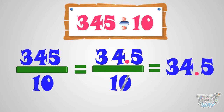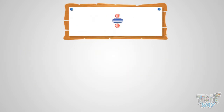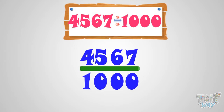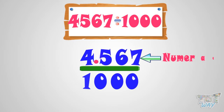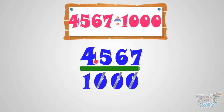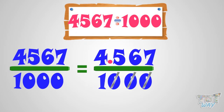Now let's take more such examples. Let's divide 4567 by 1000. In order to divide by 1000, we need to cut three zeros from the numerator and denominator. But we do not have zeros in the rightmost places in the numerator. So, we put a decimal in the numerator after three digits from the right. After cutting three zeros in the denominator and putting the decimal in the numerator after three digits from the right, we get 4.567. So, 4567 divided by 1000 equals 4.567.